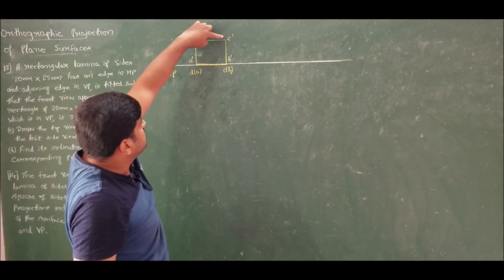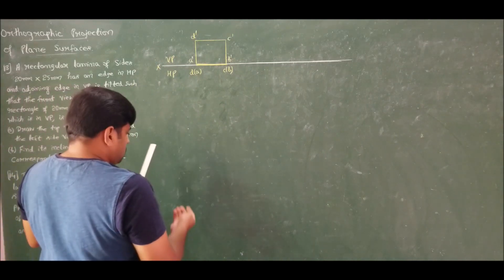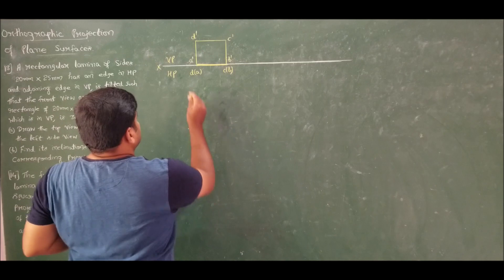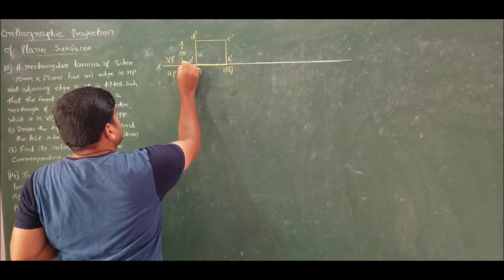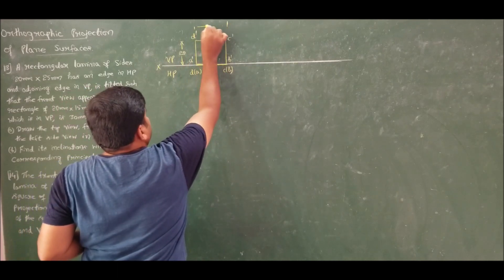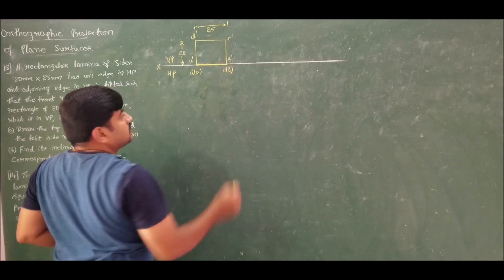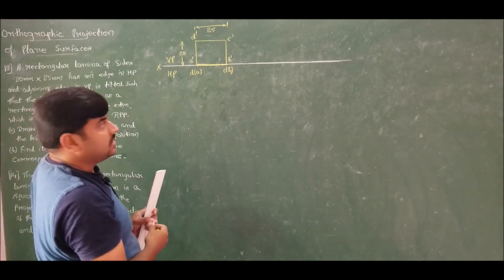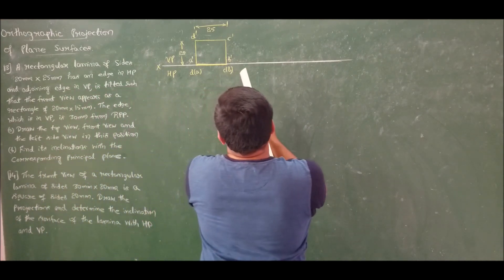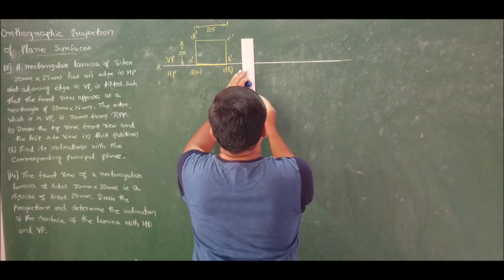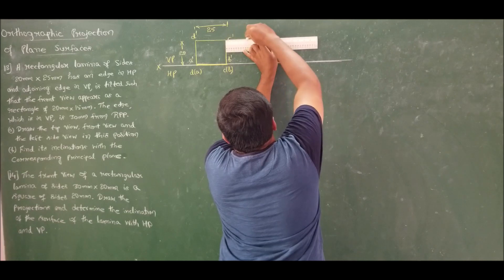When looking from top, D and C are visible while A and B are invisible. D is visible. The dimensions are 20 and 25. Now it is tilted such that I should get one more rectangle of dimension 20 × 15. So retain the dimension 20 by taking projection.